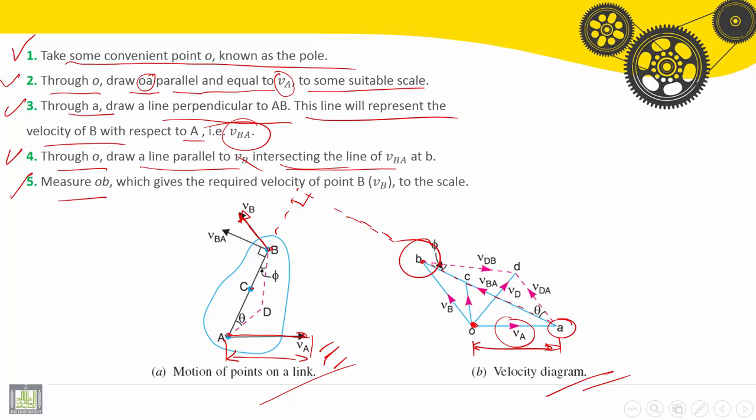Last step, measure OB. This OB, which gives the required velocity of point B, and make conversion with the scale.